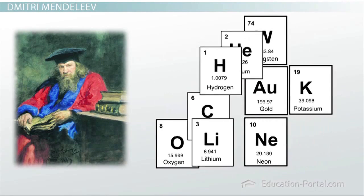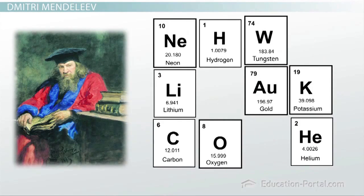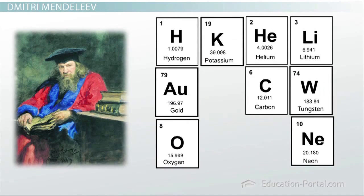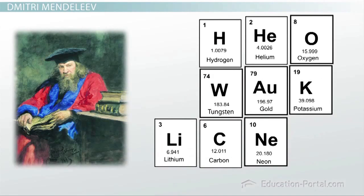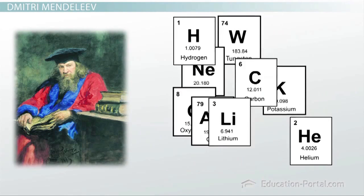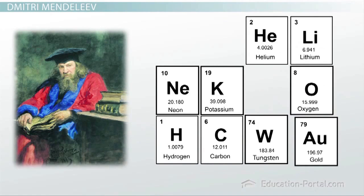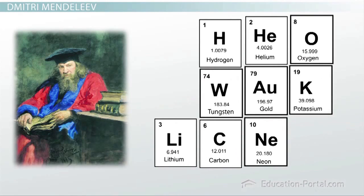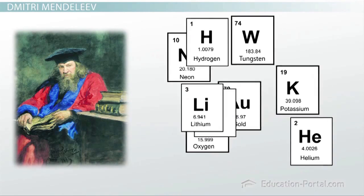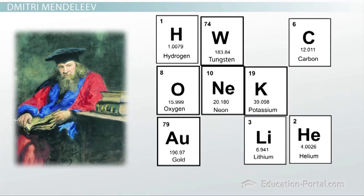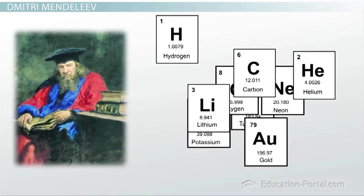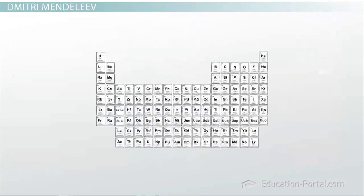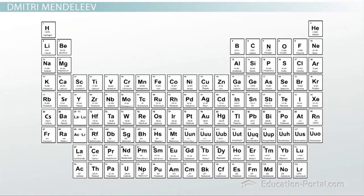While doing this, he also organized them so elements with similar characteristics were grouped together. In doing this, it was necessary to leave some blank areas in his organization, which later ended up being spots for elements that hadn't been discovered yet. What this means is his system of organization worked out so well that he could predict both the weights and the properties of undiscovered elements.